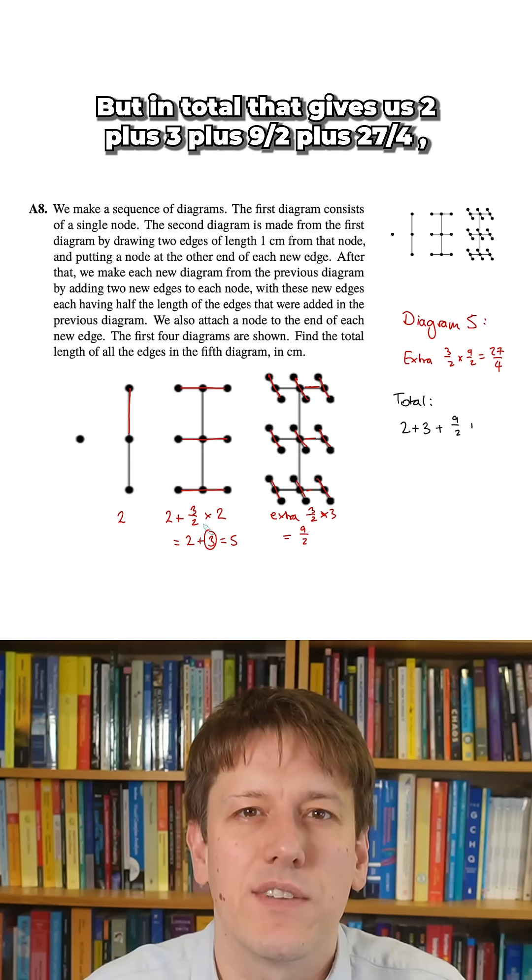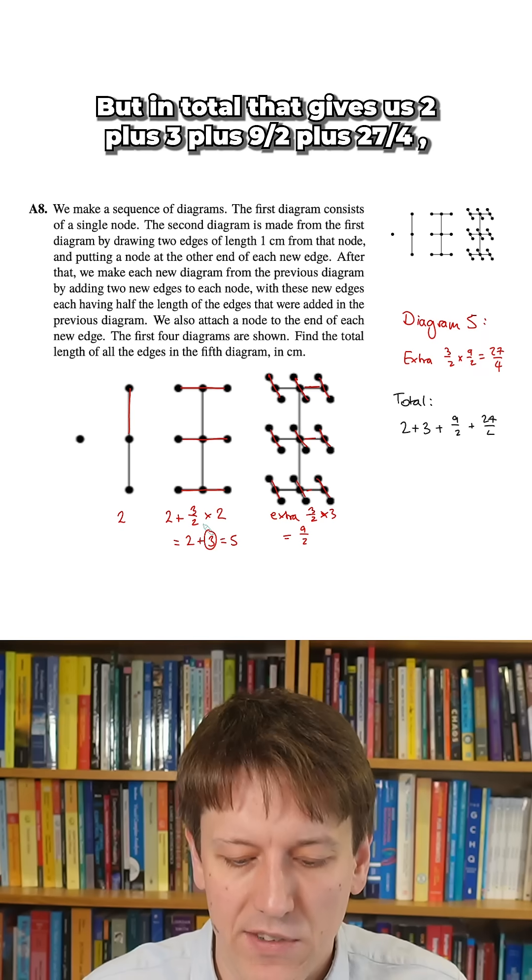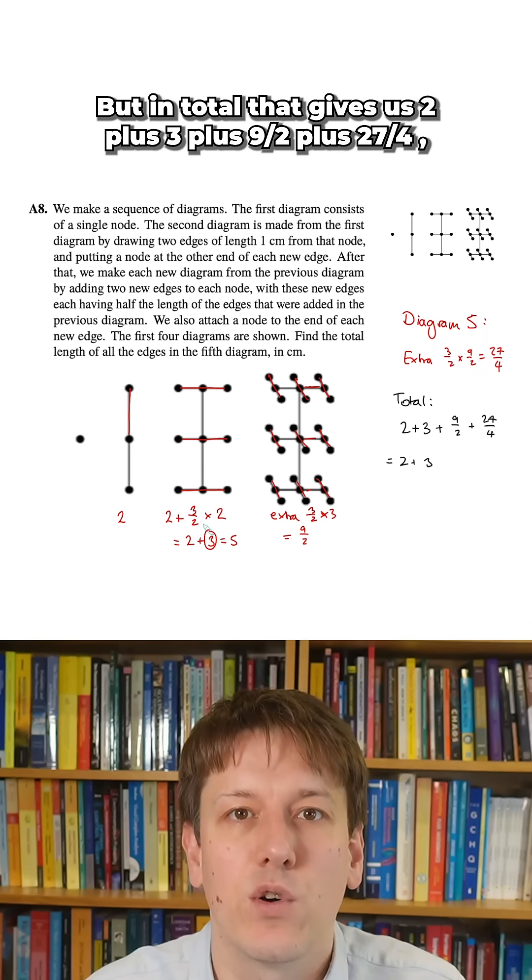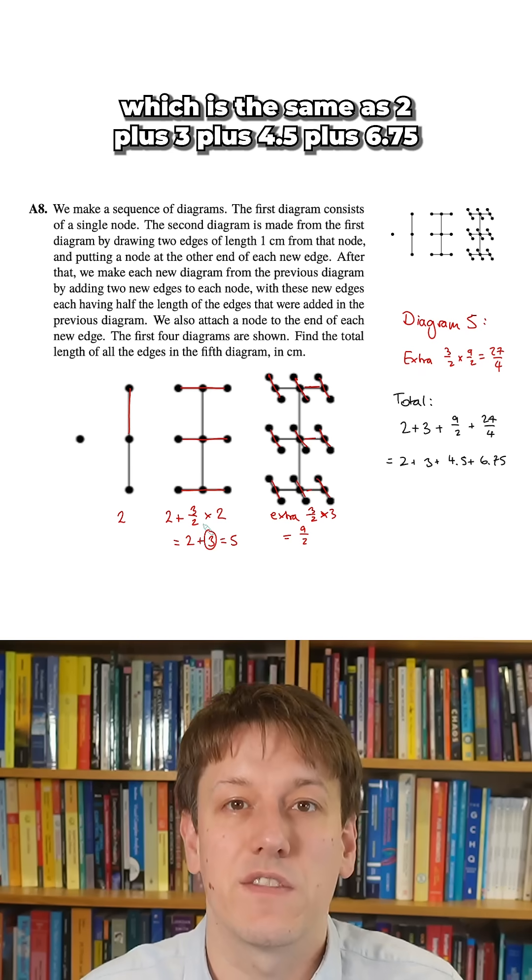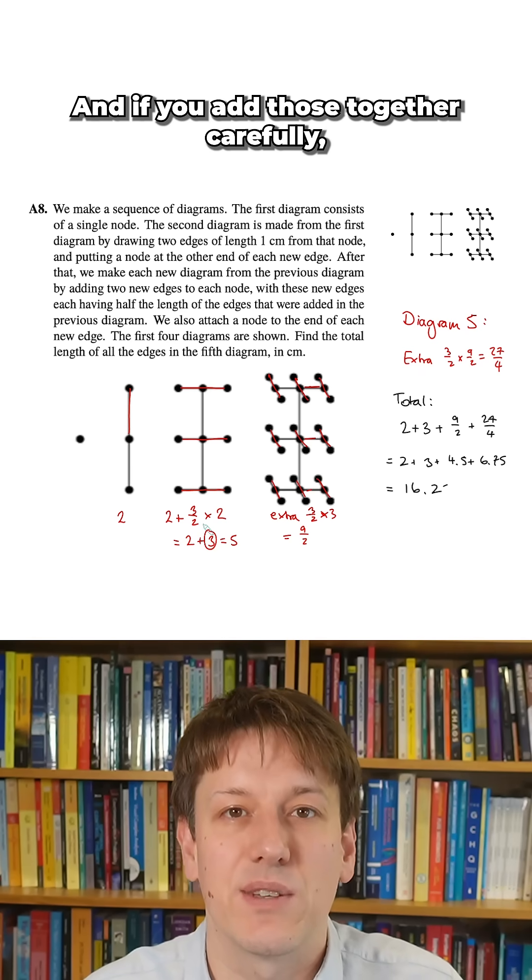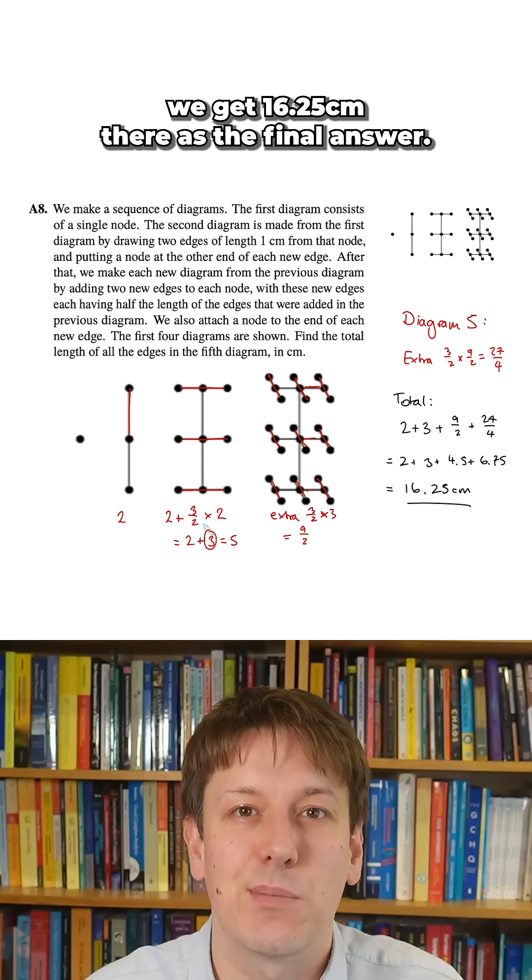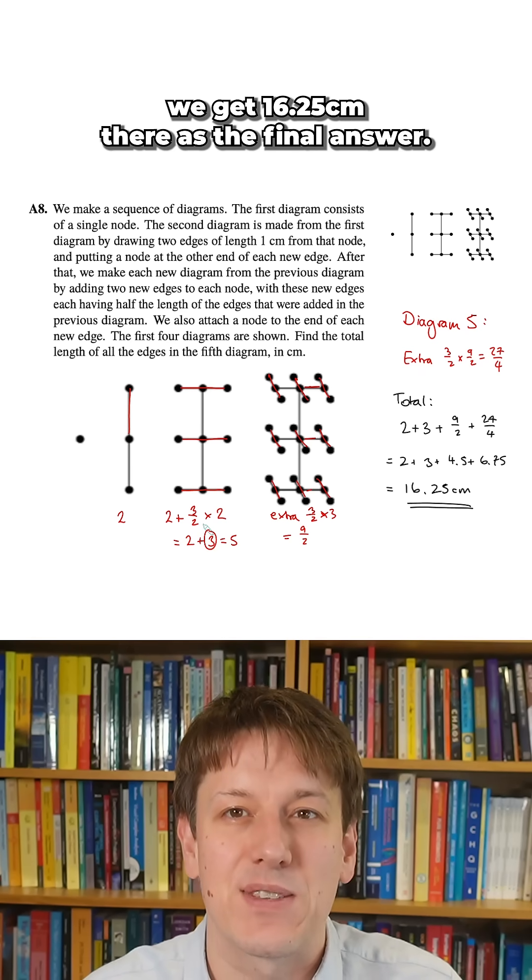So you can write that as fractions or decimals as you prefer, but in total that gives us two plus three plus nine over two plus 27 over four, which is the same as two plus three plus 4.5 plus 6.75 if we write those in decimals, and if you add those together carefully we get 16.25 centimeters as the final answer.